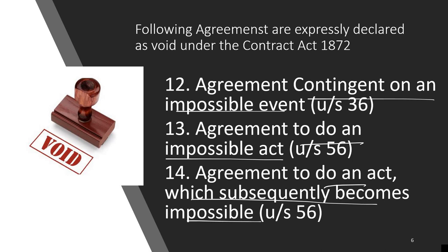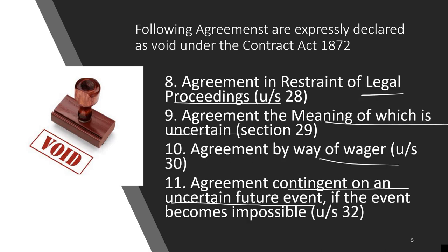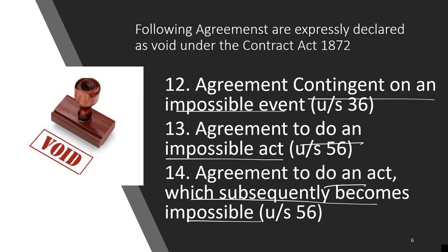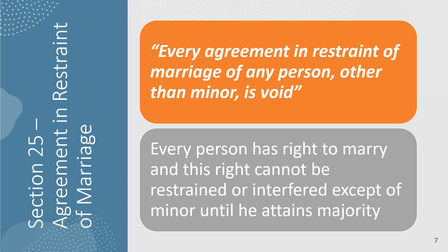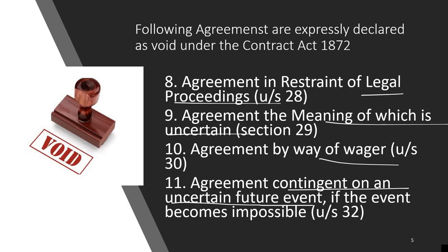Agreement to do an impossible act: if you promise something which is impossible, like bringing the moon and stars, you cannot enforce that. Then there is agreement to do an act which subsequently becomes impossible. Points 11 and 12 talk about an event on which the agreement is dependent becoming impossible, while points 13 and 14 talk about doing something impossible from the first day or which becomes impossible subsequently — both are void.